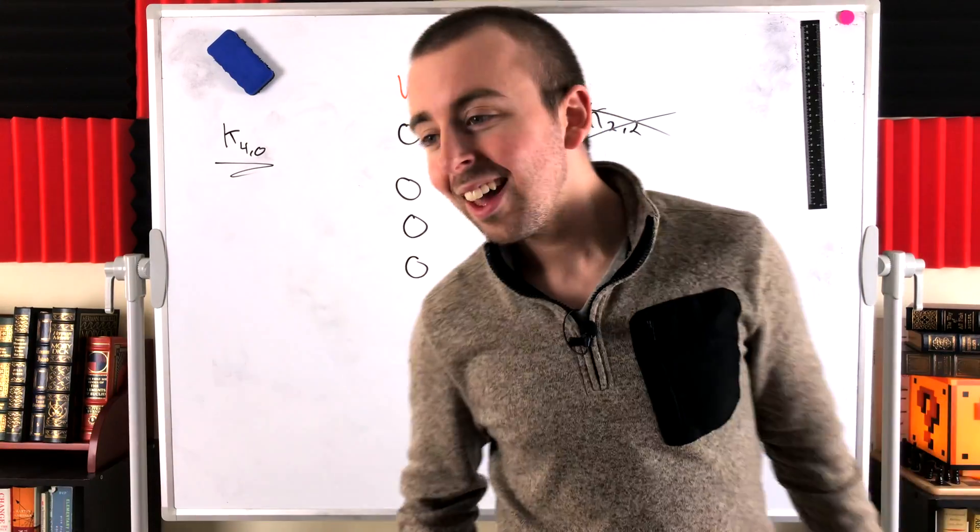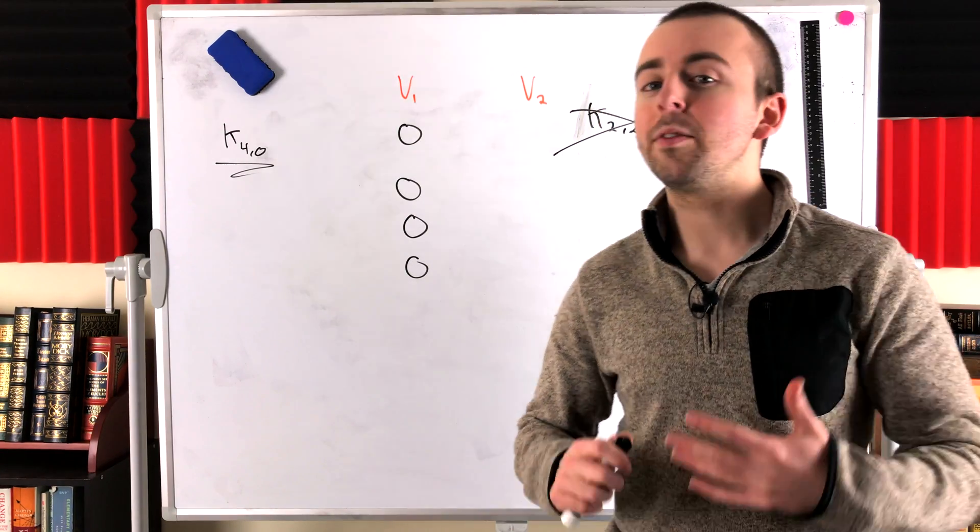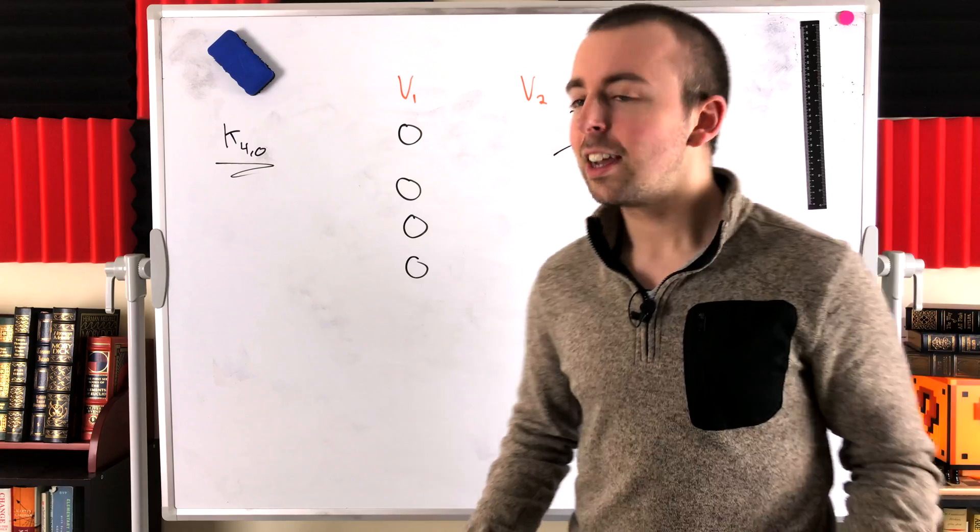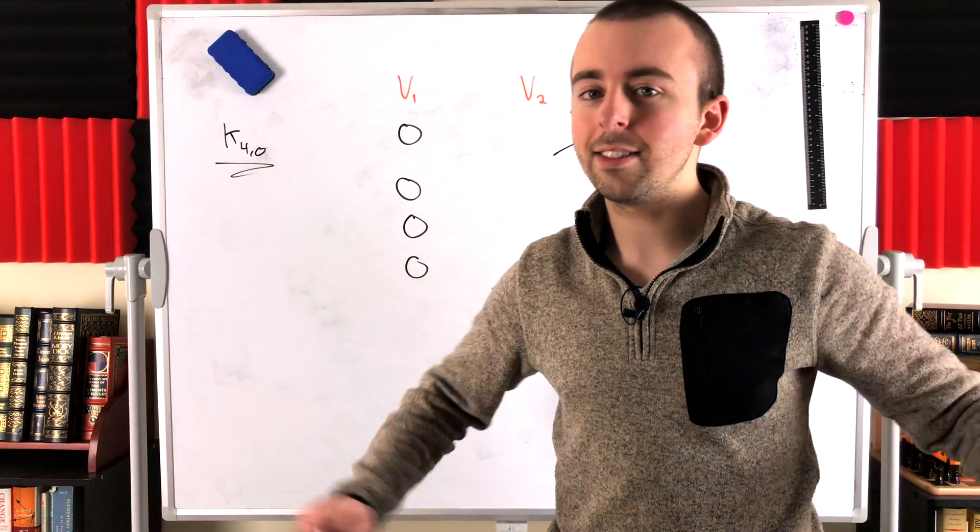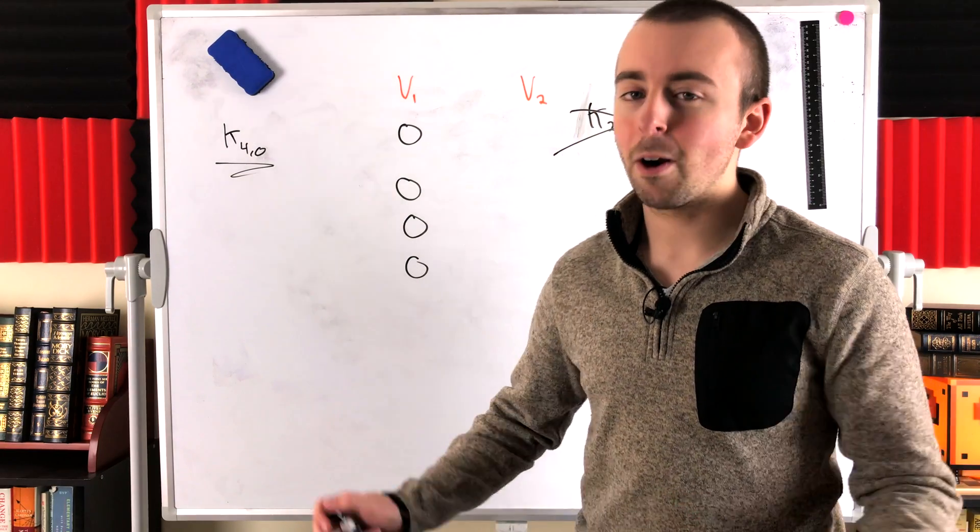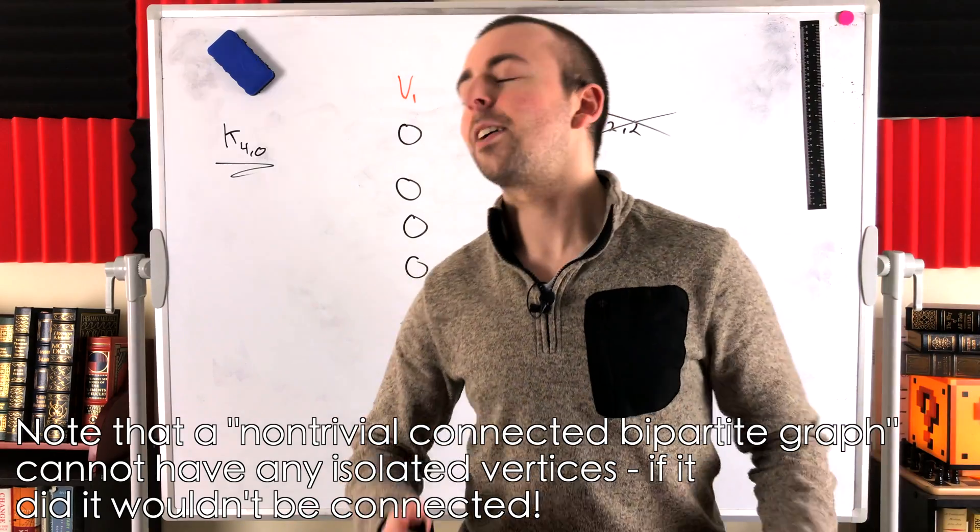But I will say, I would be surprised if there was not some paper or even numerous papers that found it useful for their purposes to define bipartite graphs with isolated vertices out of existence. If just for their purposes, they wanted to say that a bipartite graph will be assumed to have no isolated vertices, I would not be surprised.